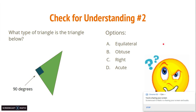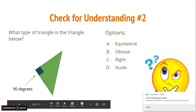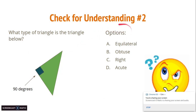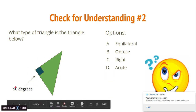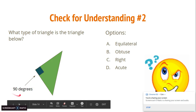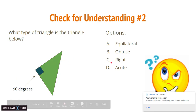We have one more check for understanding before the end of the lesson. You get a question and a picture — remember to pause the video, answer the question, then replay it and I'll explain the answer. The question is: what type of triangle is the triangle below? You can see a green triangle with an arrow indicating that this angle, marked with a square, is 90 degrees. Any triangle that has a 90-degree angle — a right angle — is a right triangle, so the answer is C.